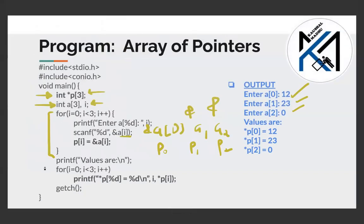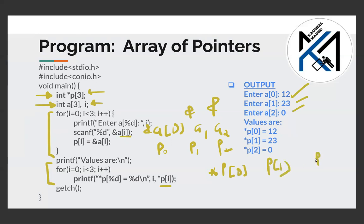Now we need to print those values by doing dereferencing. In dereferencing, we use star p[i]. First we dereference p[0], then p[1], and then p[2].